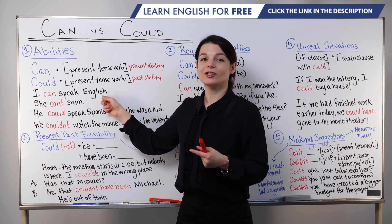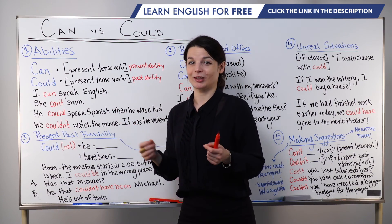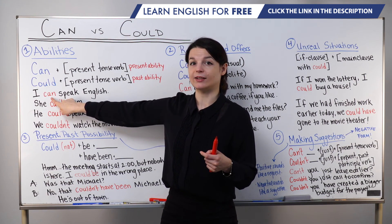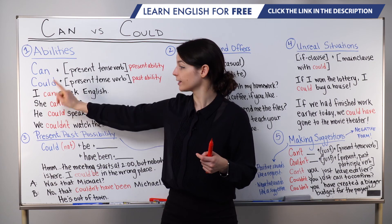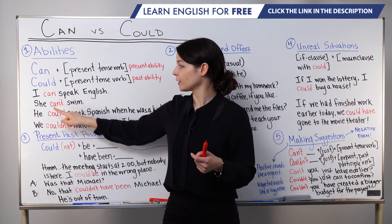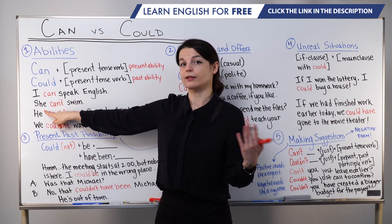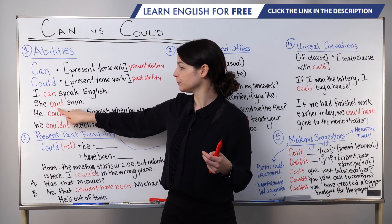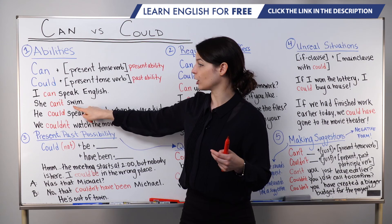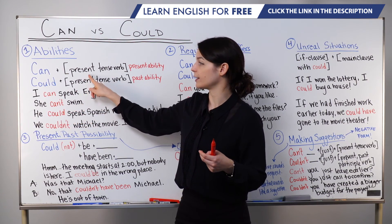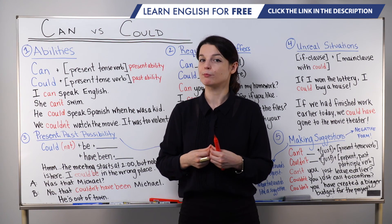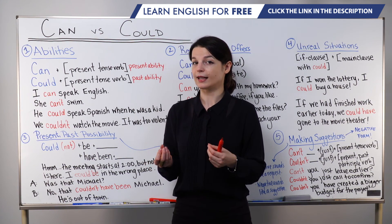Of course, we could change this to a negative: I can't speak French, for example — just replacing can with the negative can't. Let's look at a different one: She can't swim. Here, my subject has changed to she, but there's no change to can't to reflect the subject, and swim, the verb following can't, remains in the present tense. These are basic examples of how to express abilities with can and can't in present.